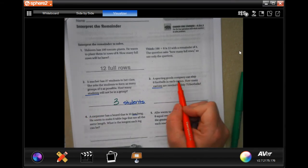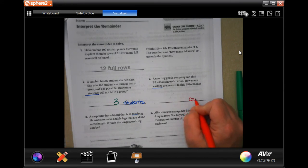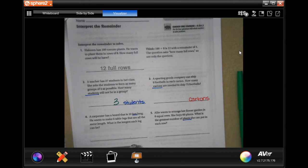The next one says, a sporting goods company can ship 6 footballs in each carton. How many cartons are needed to ship 75 footballs? I underline cartons because it's asking how many cartons. That means, whatever our answer is, it's going to be in cartons.